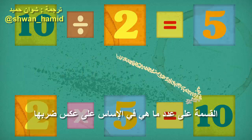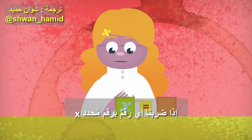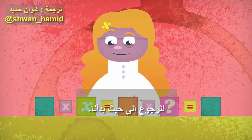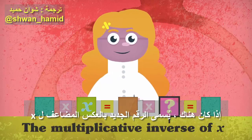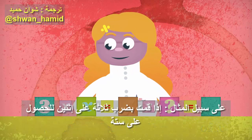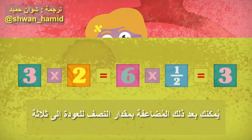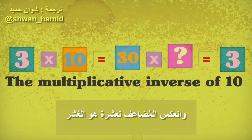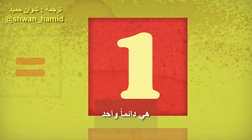Dividing by a number is essentially the reverse of multiplying by it in the following way. If we multiply any number by a given number x, we can ask if there's a new number we can multiply by afterwards to get back to where we started. If there is, the new number is called the multiplicative inverse of x. For example, if you multiply 3 by 2 to get 6, you can then multiply by 1 half to get back to 3. So the multiplicative inverse of 2 is 1 half, and the multiplicative inverse of 10 is 1 tenth. The product of any number and its multiplicative inverse is always 1.